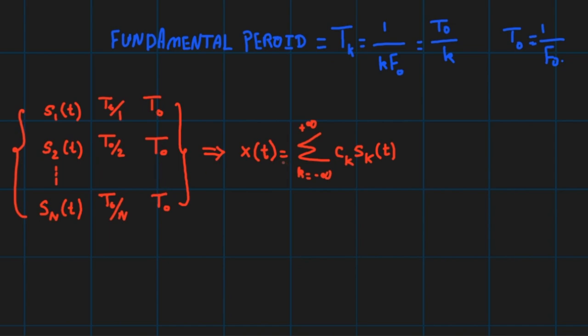Because each and every one of those s_k(t) has a common period T₀, it will turn out that x(t) has not only a period T₀, but a fundamental period T₀.